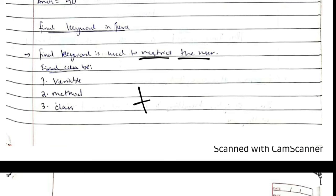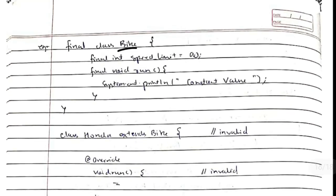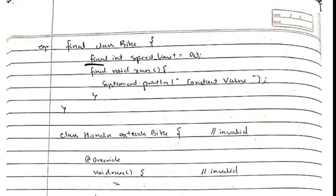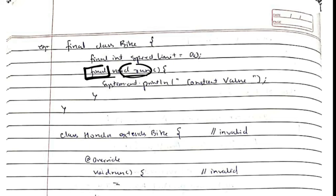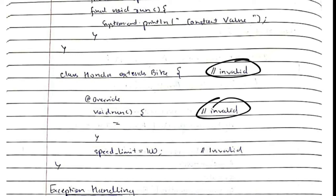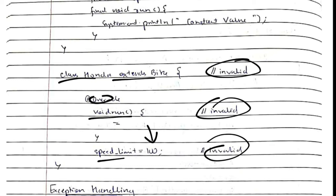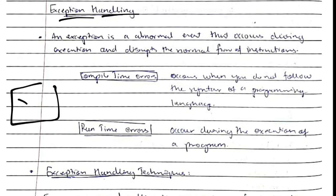The 'final' keyword in Java restricts the user. When applied to a variable, method, or class, it becomes constant. For example, class Bike has a final variable 'speedLimit' set to 90 and a final method 'void run'. If 'final' is used on a class, the class cannot be inherited. If used on a variable, its value is constant and cannot be changed. If used on a method, the method cannot be overridden. Any attempt to inherit or override will show an invalid error.